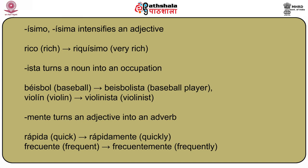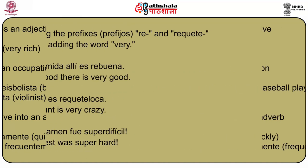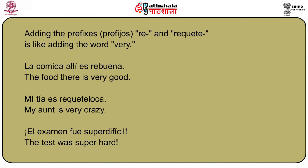-Mente turns an adjective into an adverb: rápida (quick) → rápidamente (quickly); frecuente (frequent) → frecuentemente (frequently). Some places in the Spanish-speaking world also allow for the use of prefixes (prefijos). Adding the prefixes re- and requete- is like adding the word 'very.' You should already know how to handle the prefix super-. For example: La comida allí es re buena — The food there is very good. Or you can say super buena for 'excellent.' Mi tía es requete loca — My aunt is very crazy. Or mi tía es super loca. El examen fue super difícil — The test was super hard.